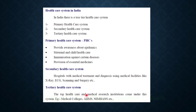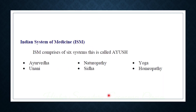Tertiary health care includes top health care and medical research institutions such as Medical Colleges and AIIMS. These are the levels of the healthcare system. India also has the Indian system of medicine.